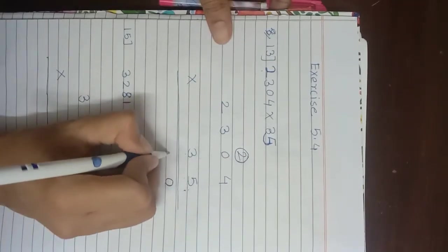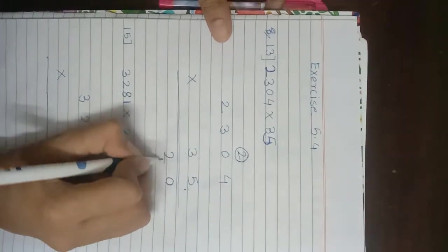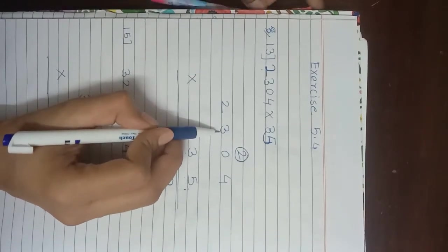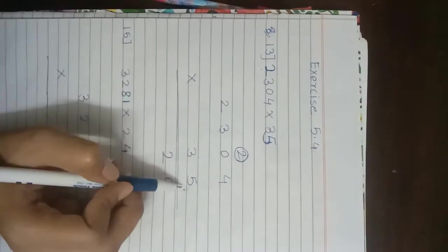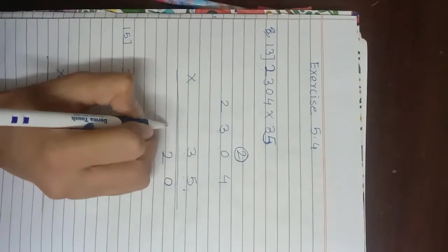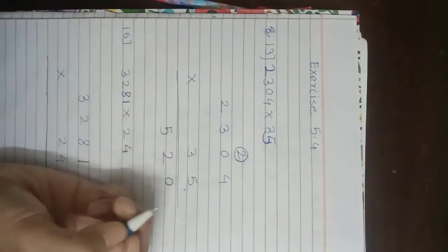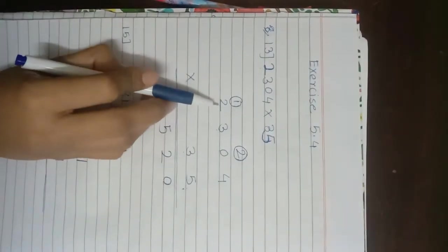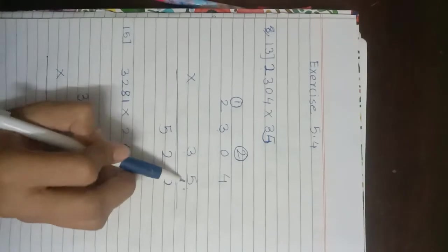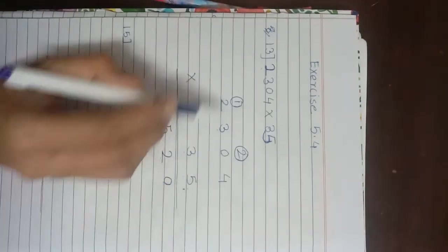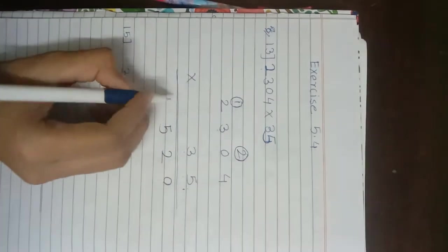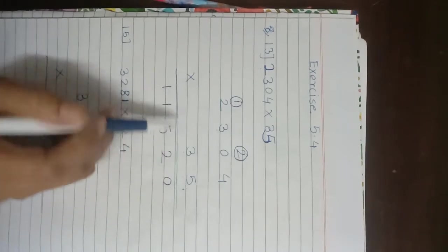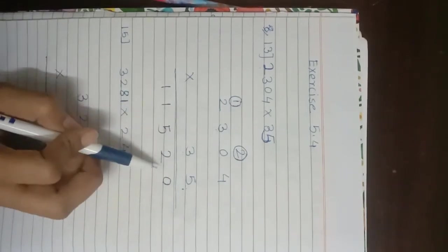Continuing the multiplication by 5: 3 multiplied by 5 is 15, write 5 and carry 1. 2 multiplied by 5 is 10, plus carry 1 is 11. So the product after multiplying by 5 is 11,520.